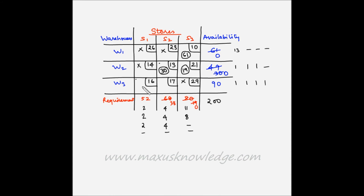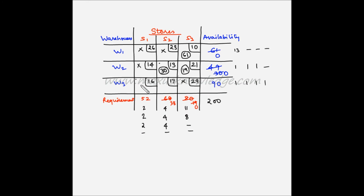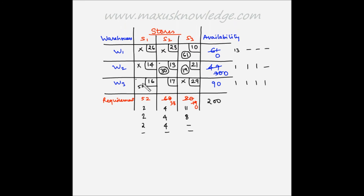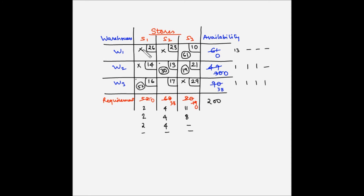Evaluating the supply and demand for W3S1: W3 has a supply availability of 90 units while S1 has a demand of 52 units, so the maximum we can allocate is 52 units. With this allocation, the entire demand for S1 has been met, leaving 0 remaining demand, while W3's supply becomes 90 minus 52 = 38 units. S1 is now no longer available for any other allocations.